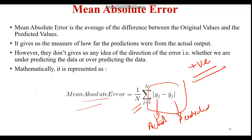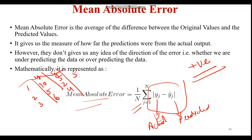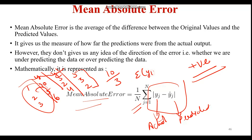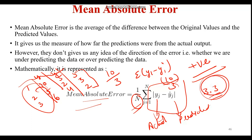For example, suppose we have 3 data points with actual values Y and predicted values Y-dash. If actual values are 10, 5, 6 and predicted values are 5, 2, 4 respectively, the differences are 5, 3, and 2. The sum is 10, divided by N = 3, giving a mean absolute error of approximately 3.3. This is how mean absolute error is calculated.